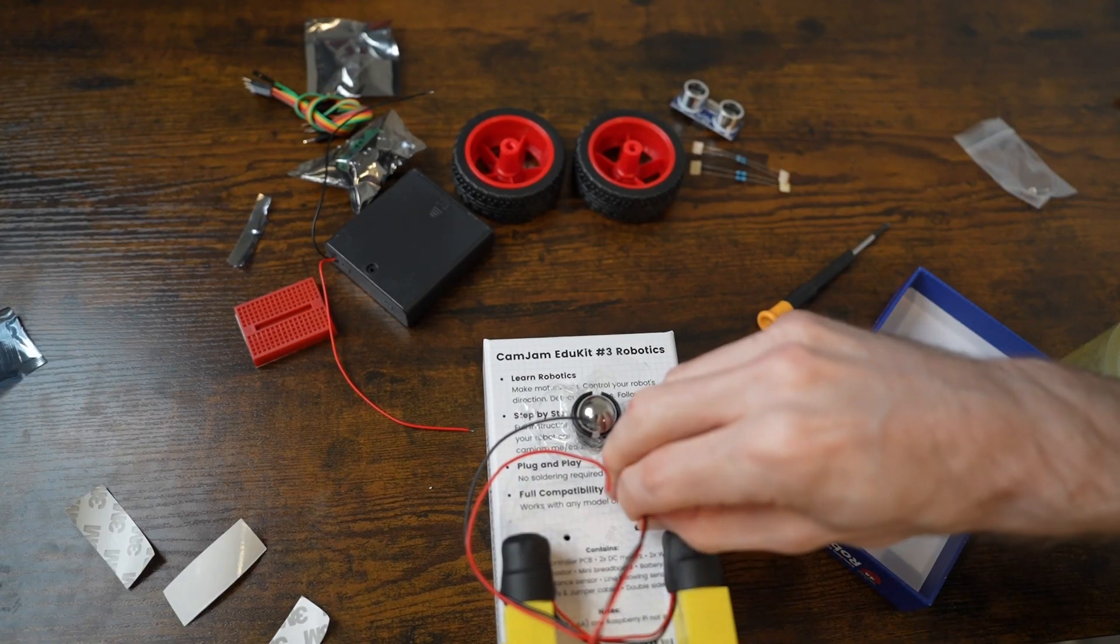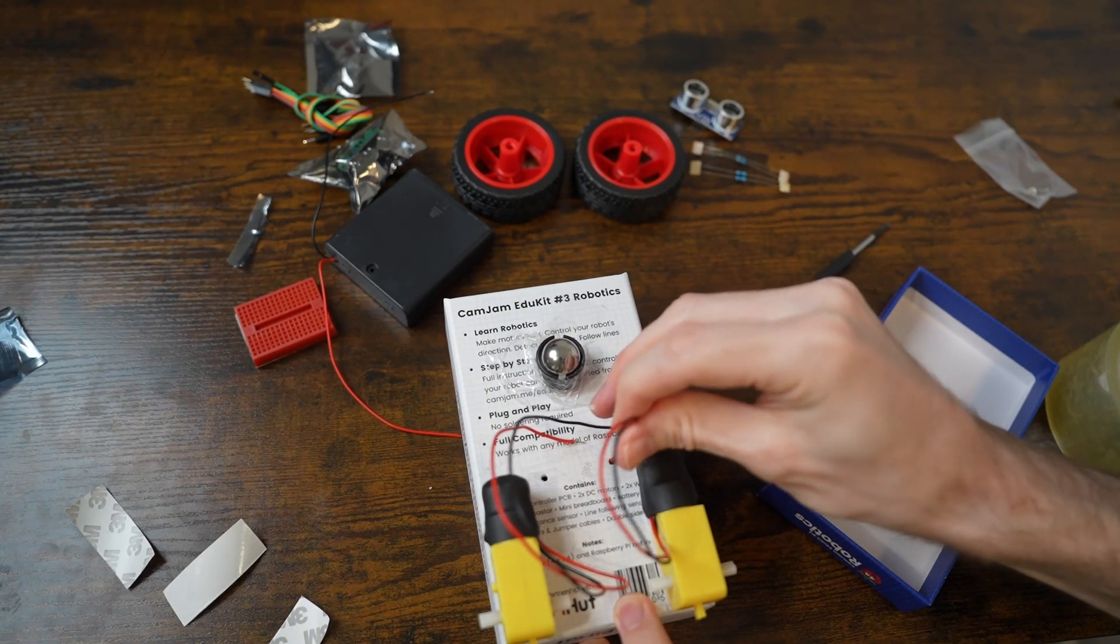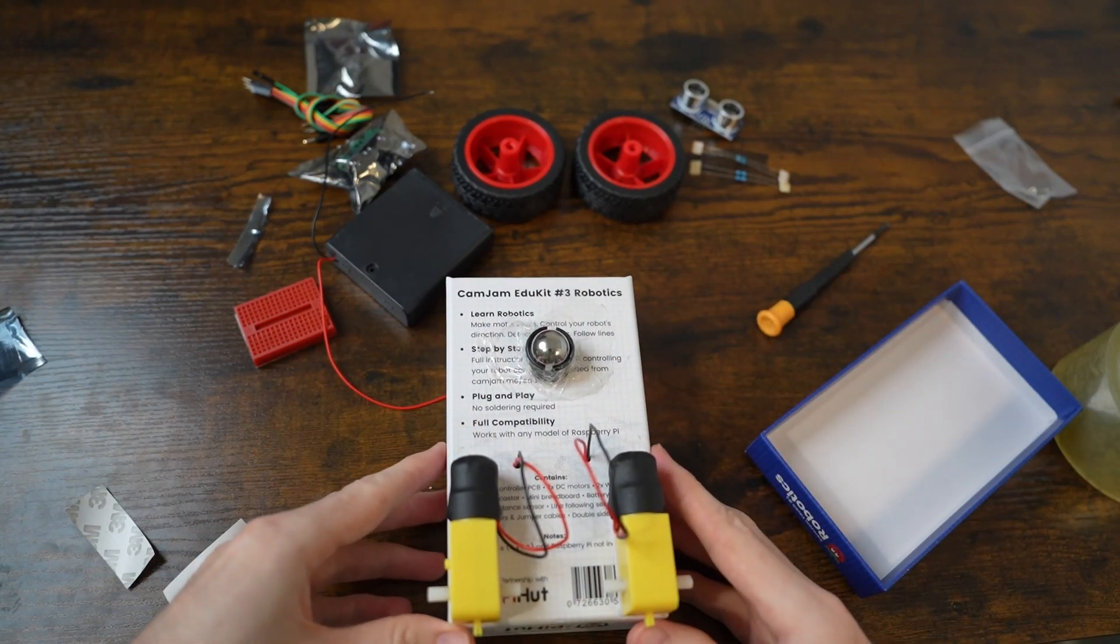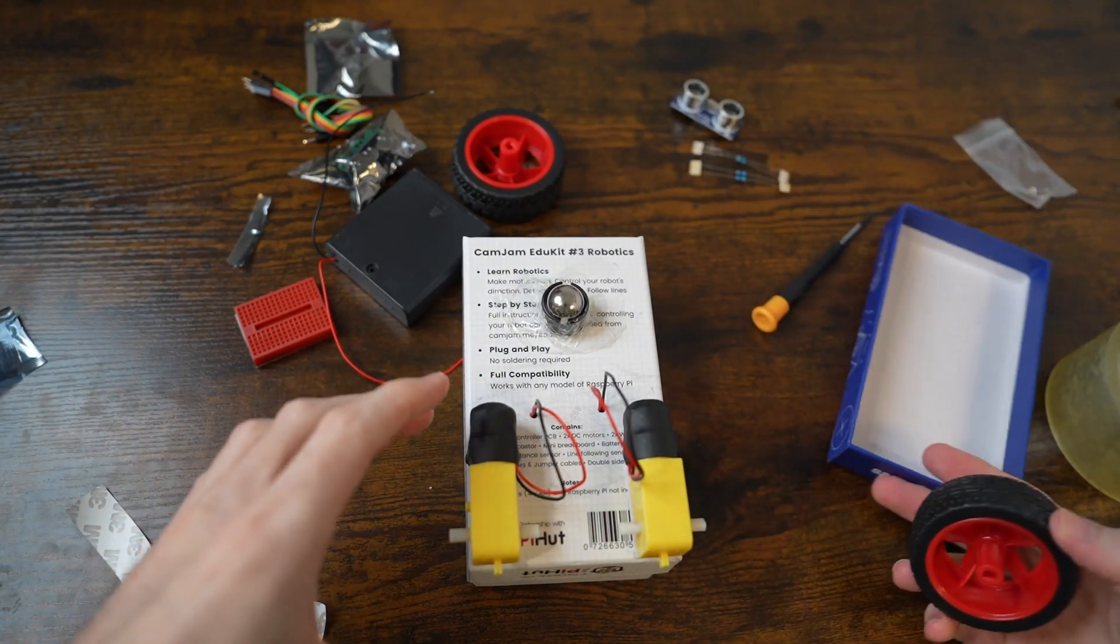Once the holes have been punched, feed the wires through. Then attach the wheels to the motors.